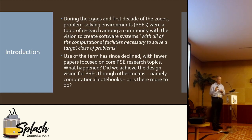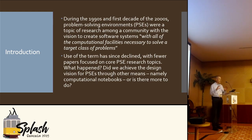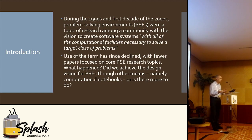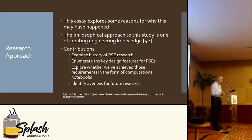We'll talk about the shape of the literature when I review it. But the question I was most interested in is: we reached a point in this community of defining what a problem-solving environment was — did we actually achieve that? Is that why it's no longer of interest in the literature? We solved the problem? Well, I'm not so sure that's true. So let's take a look at that.